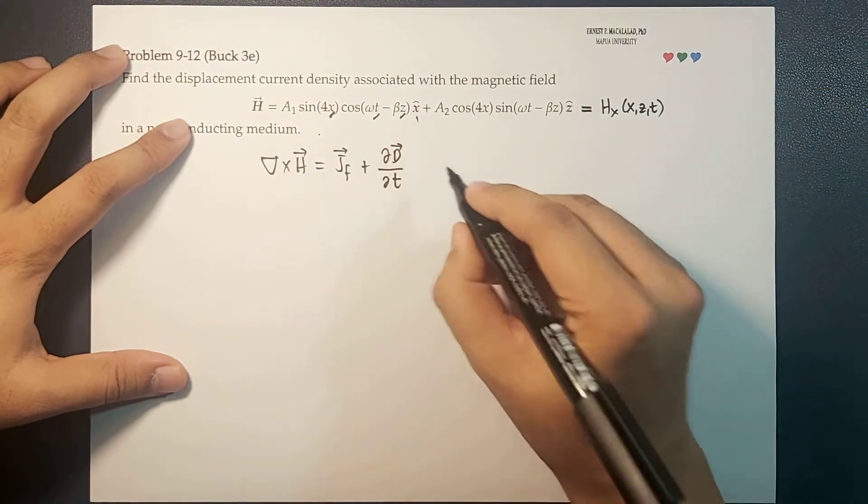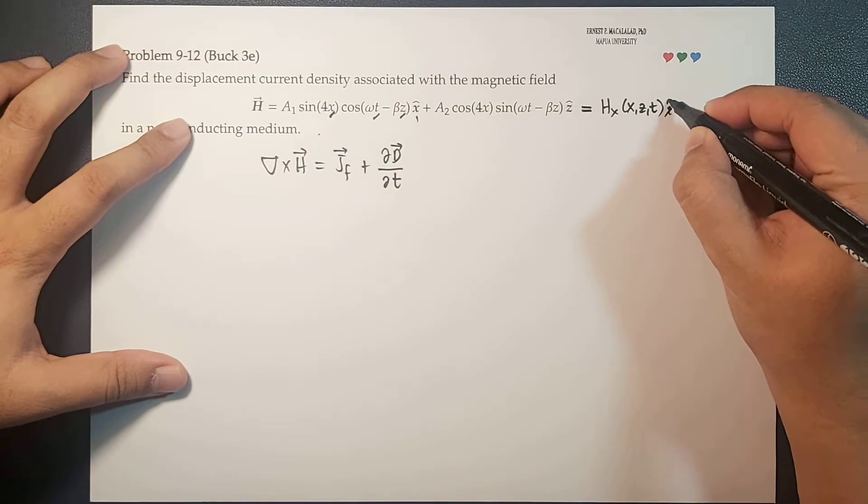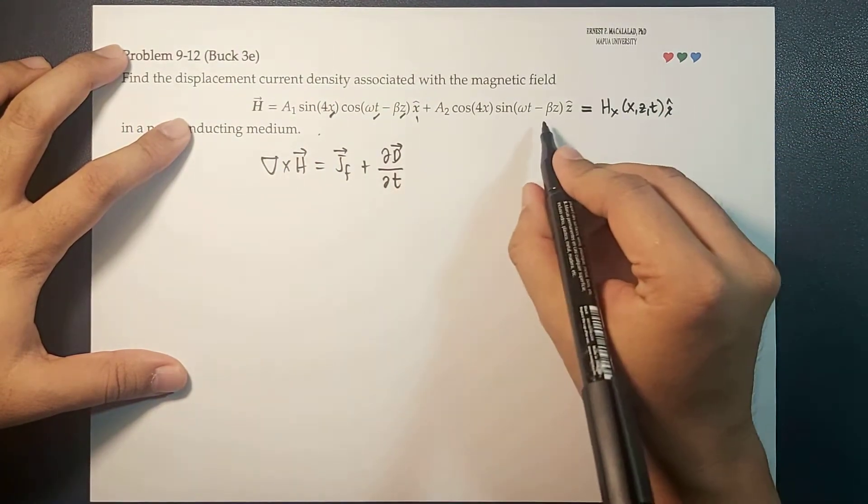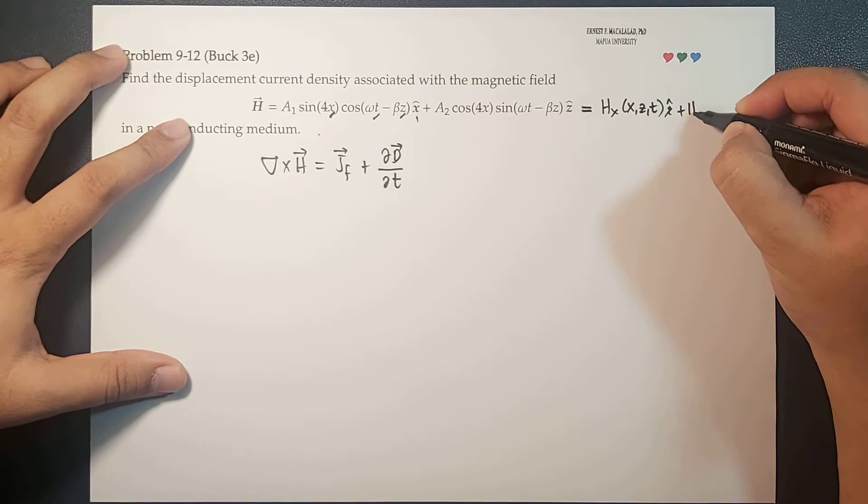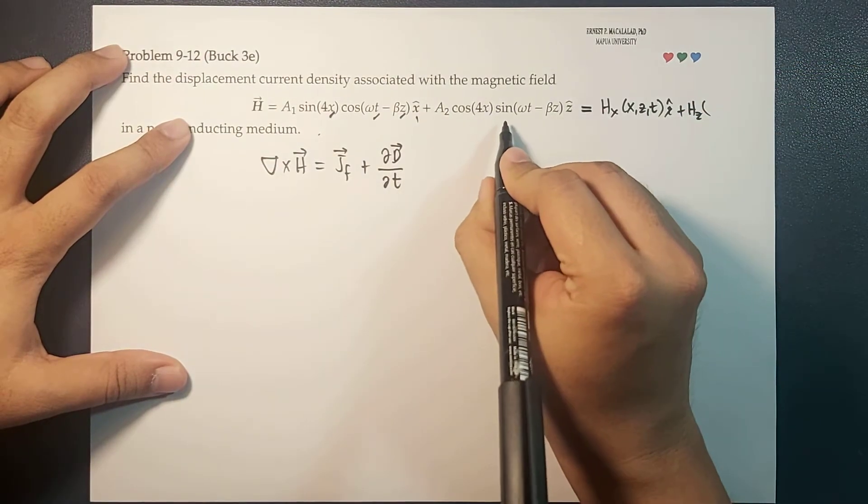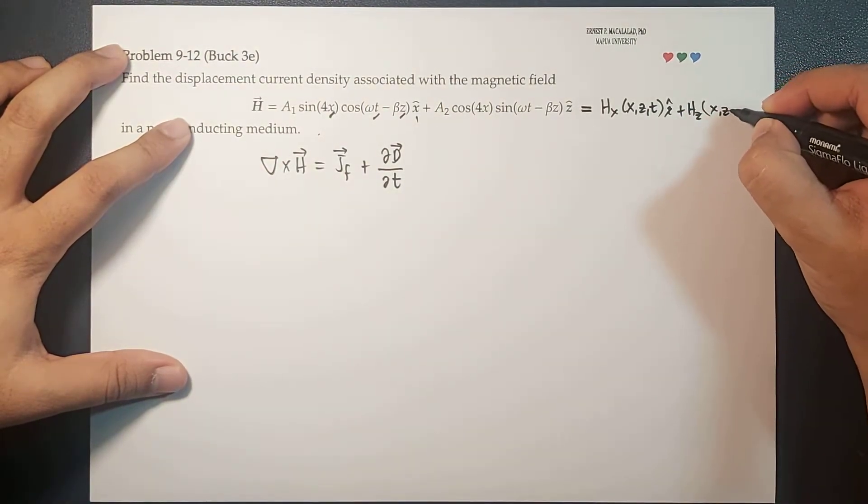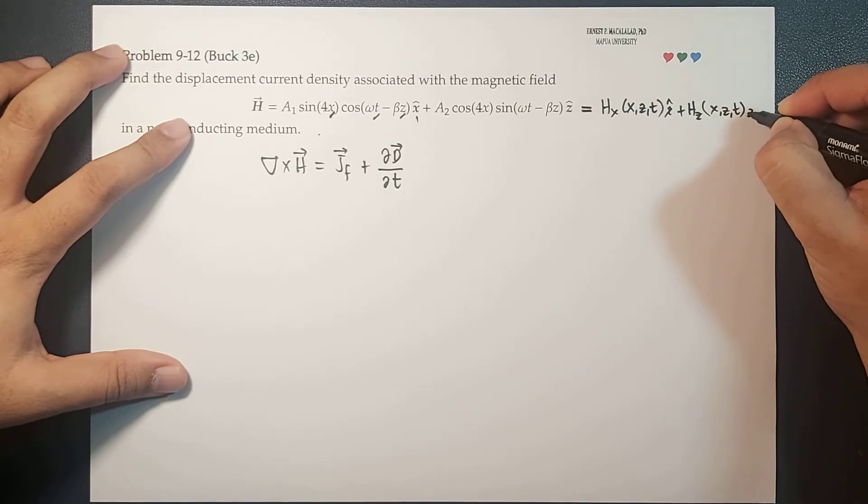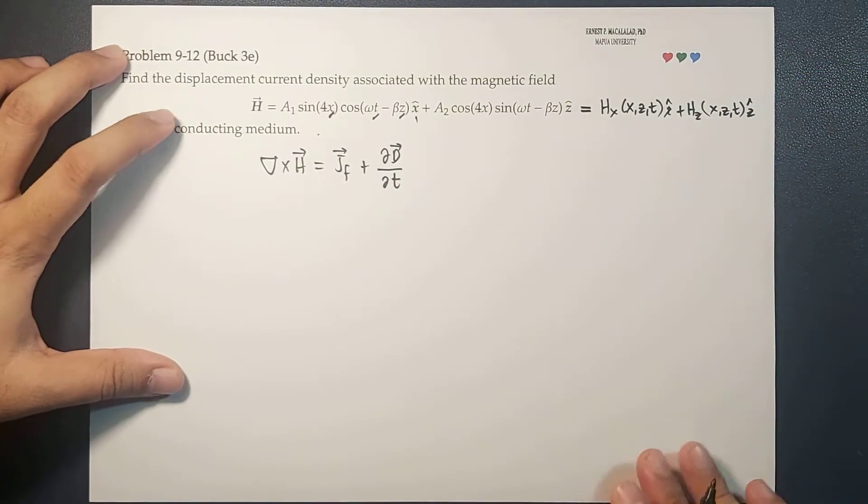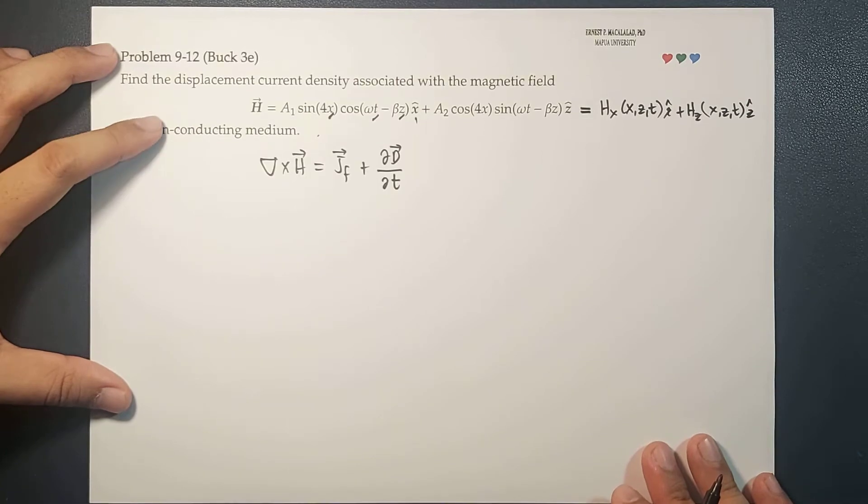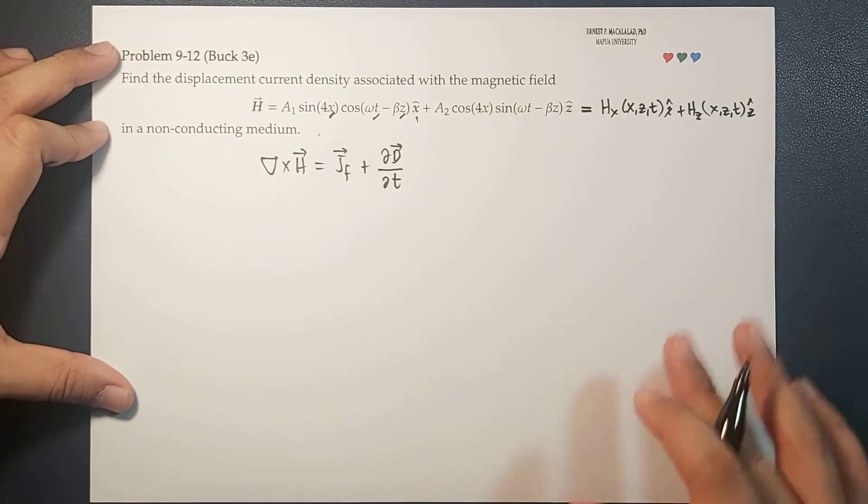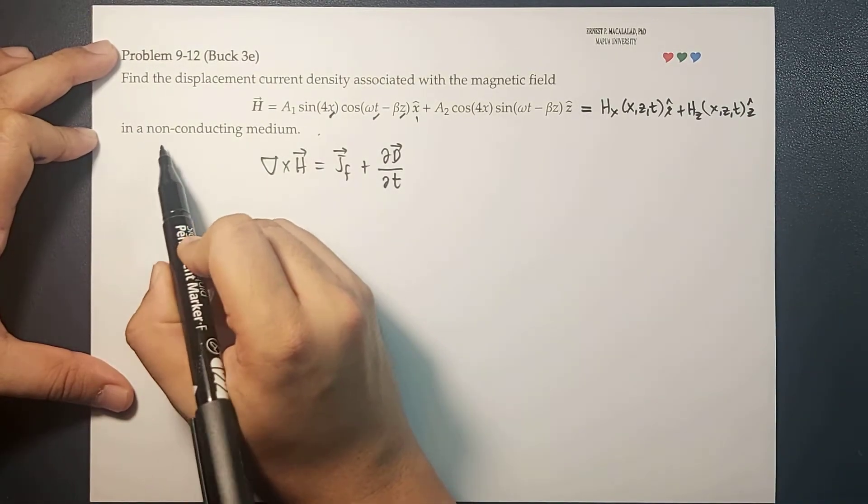in the direction of x-hat. On the other hand, the Z component is a function of x, z, and t as well, and this is along the direction of z-hat. Also, it's mentioned here that the